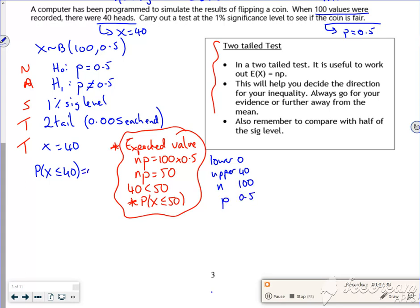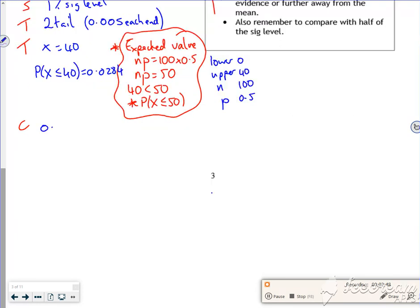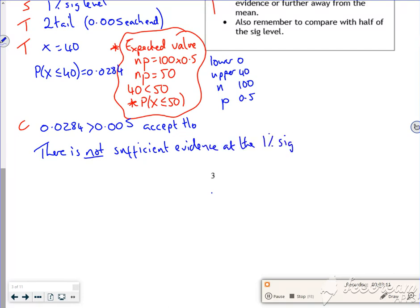Gives me 0.0284. In terms of my conclusion, 0.0284 is greater than 0.005, so I accept H0, that there is not sufficient evidence at the 1% significance level to suggest that the coin is not fair.